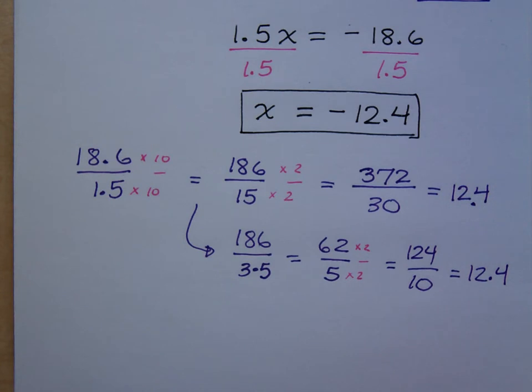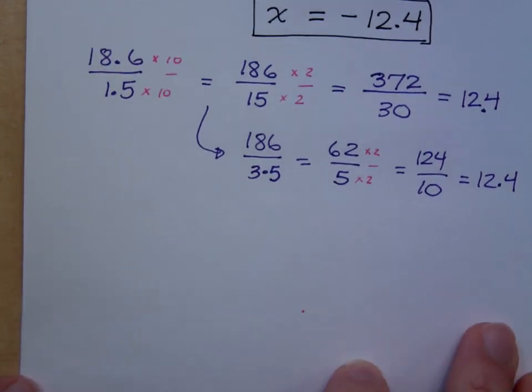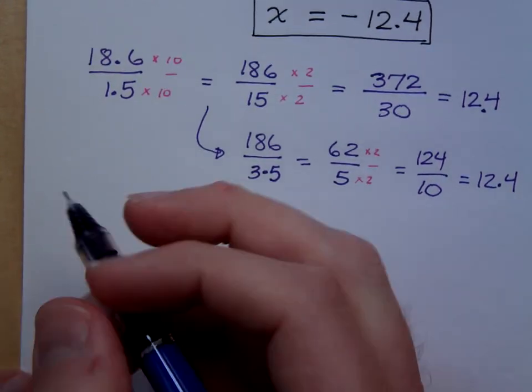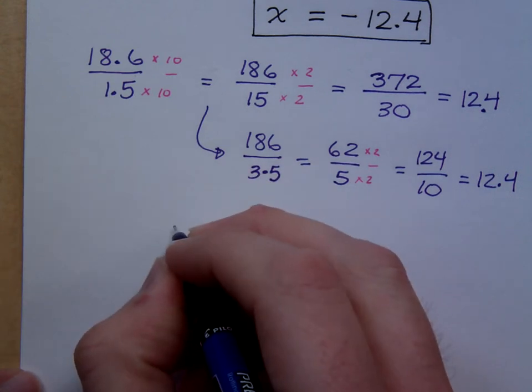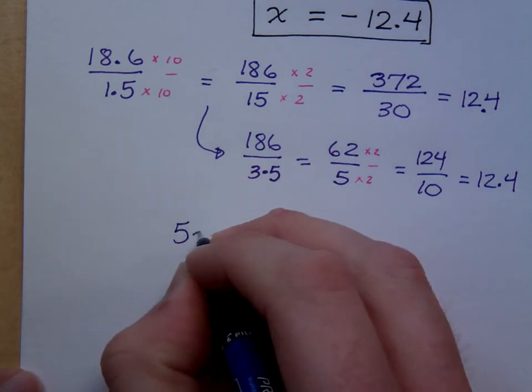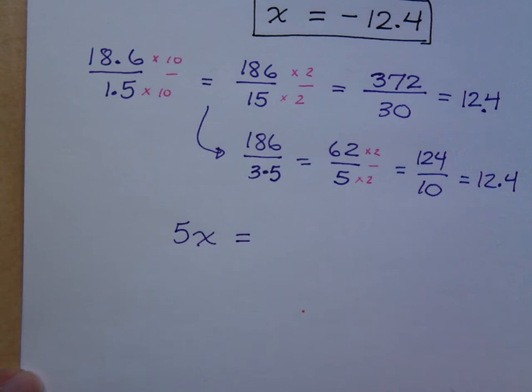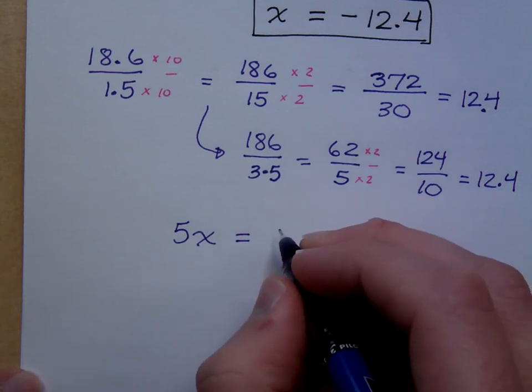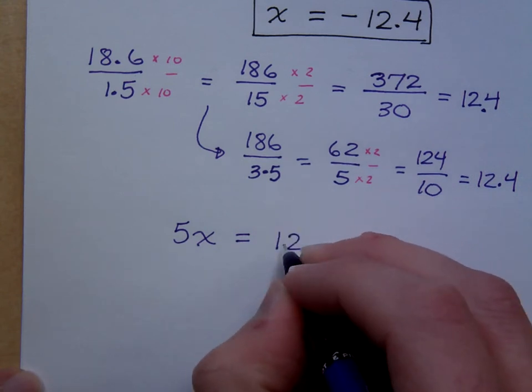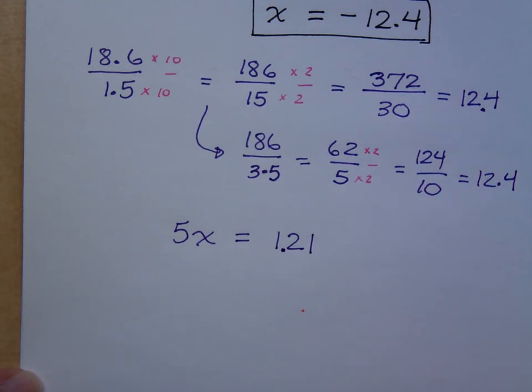You want to see some more? Okay let me help you out here. If I have 5x equals, what sounds good? 121? No, 1.21, there we go, now it's fun. 121 nice whole numbers, no no no, we're better than that.